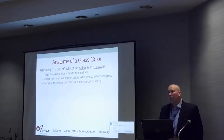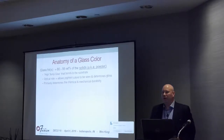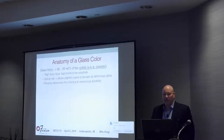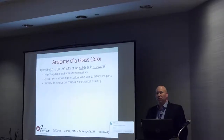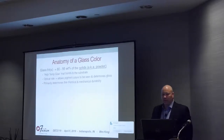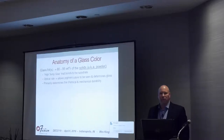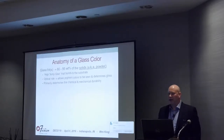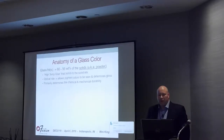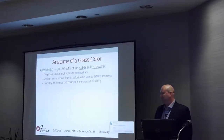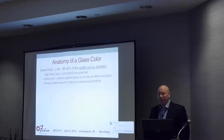Glass frits are the majority component of what we're calling glass color in a ready-to-screen product from a can. Typically 80 to 95 weight percent of the solids are the glass frit. This acts as a high-temperature glue that bonds to your substrate, whether it's glass or ceramic or the glaze on the ceramic. It has an optical role—it's supposed to be transparent, holding the pigment colors in place so light can interact with those colors and return to your eye. It also determines the gloss, and because it's such a large percentage of the decoration, it primarily determines the chemical and mechanical durability.